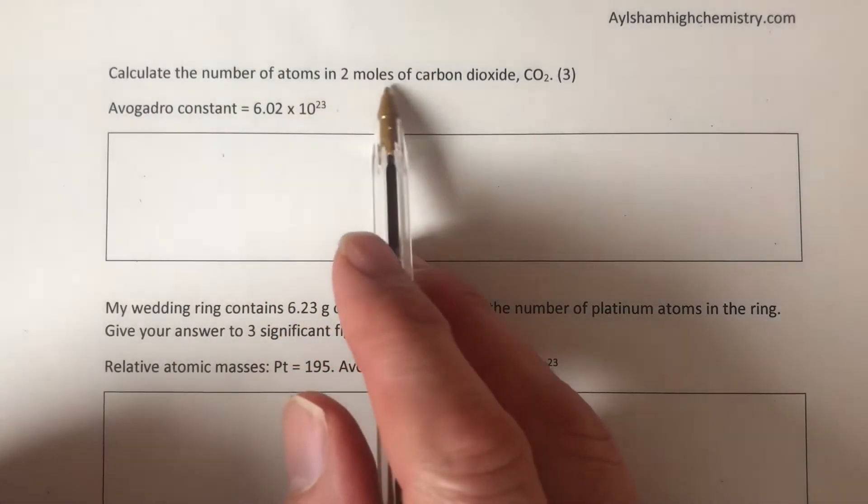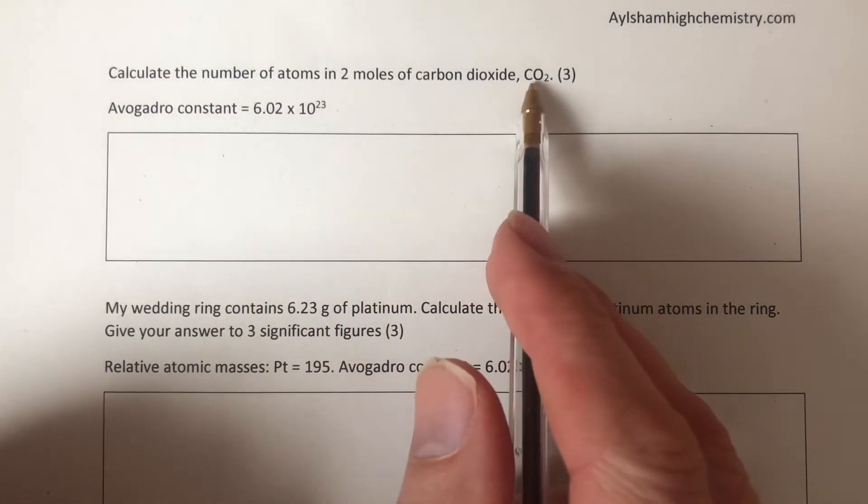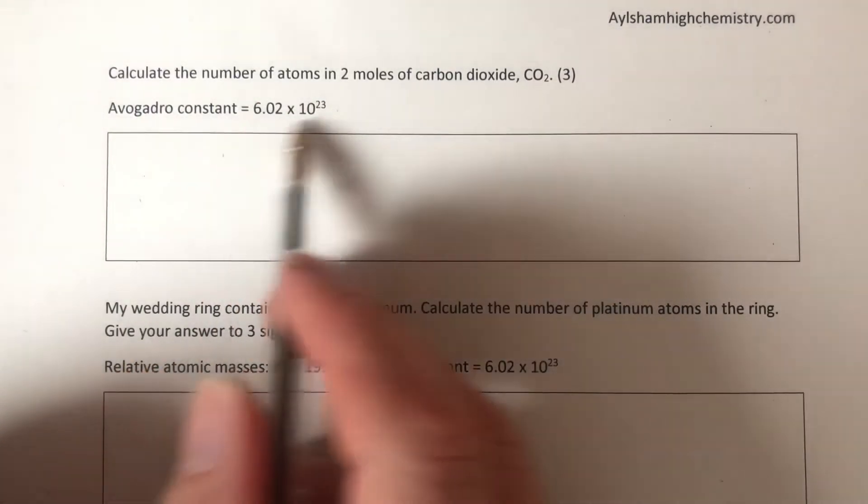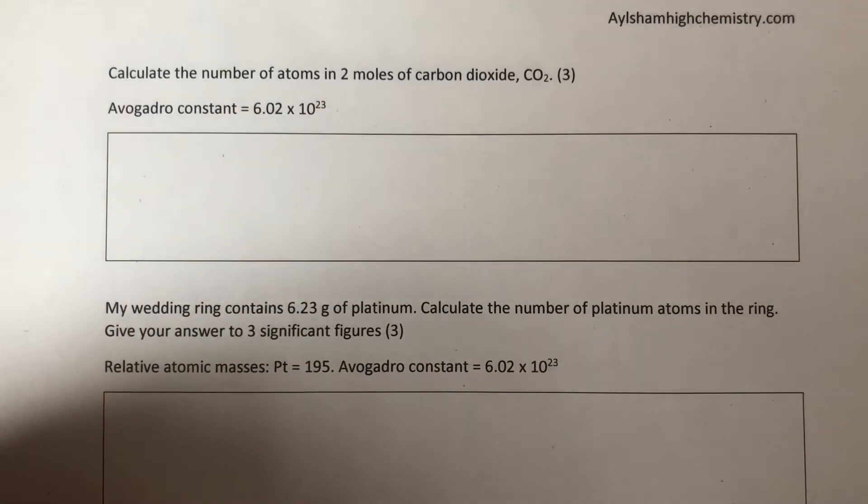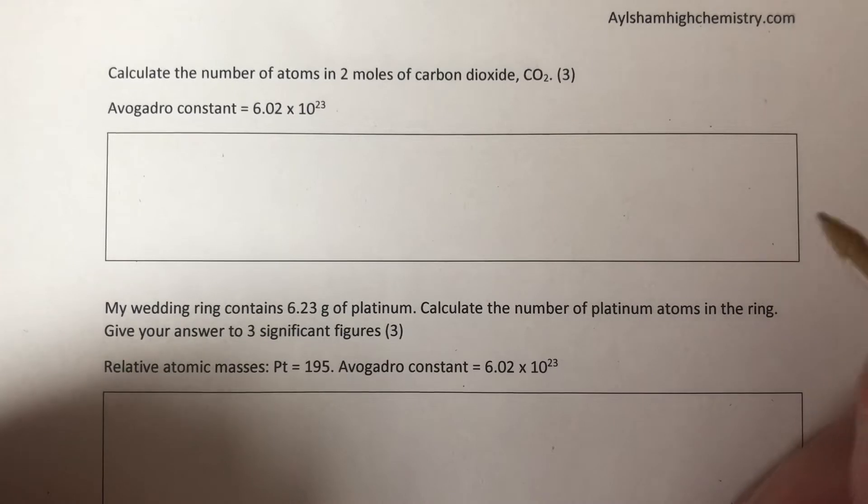Calculate the number of atoms in two moles of carbon dioxide. This is a question about using the Avogadro constant. I sometimes think these are the easiest questions in chemistry and the hardest questions in chemistry.